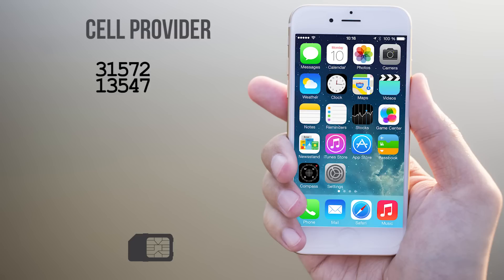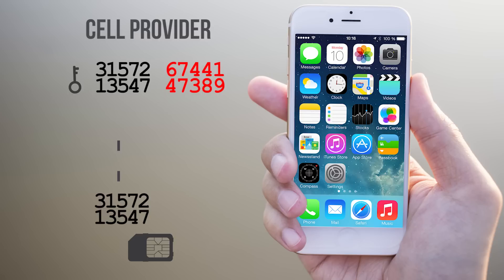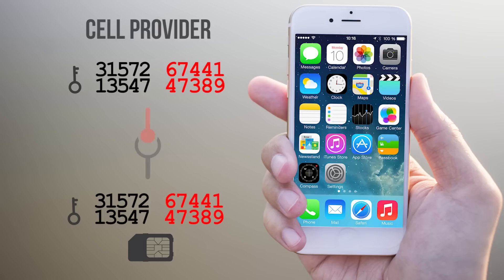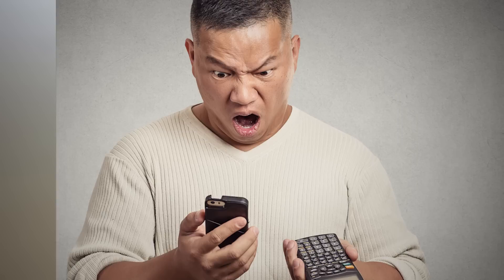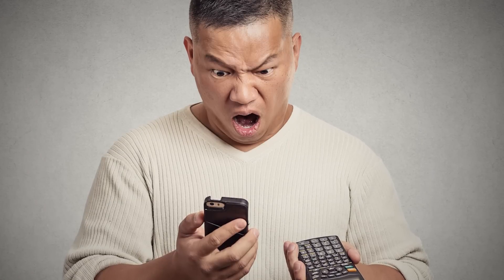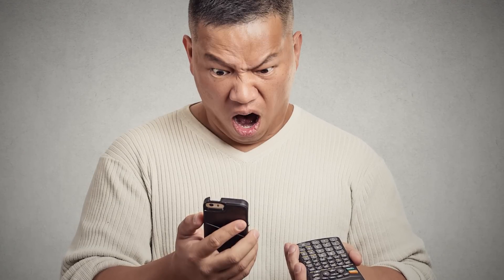Your provider then generates a random number and uses the key to produce a response number at the same time. That random number is sent back to your phone, and the same calculation is done with the authentication key to generate another response number. If the two numbers match, your provider will recognize this and connect your phone to the network — both ensuring it's actually you to keep your data safe, and to see who you are so your provider can block access if you haven't been paying your bills.